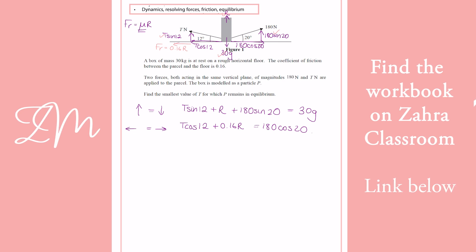Okay, so we've got two equations, two unknowns. We can first rearrange the first one. And I would probably just make, so if I call that 1 and call that 2, because you've all got calculators where you can put things in using your simultaneous equations button. So minus 180 sine 20. So then I've got T cos 12 plus 0.16R equals 180 cos 20.